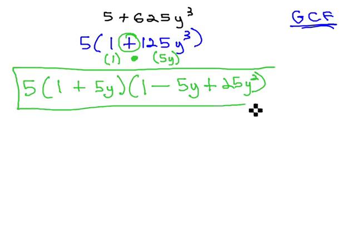We have now factored our binomial to 5 times 1 plus 5y, times 1 minus 5y, plus 25y squared.